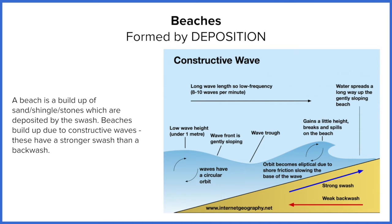Beaches are predominantly found in areas where there are significant amounts of constructive waves all year round. That might change over the year, as we're going to see in another lesson — next lesson we're looking at factors that can influence change along coastlines — but the majority of the time, beaches form where constructive waves are happening most of the year.